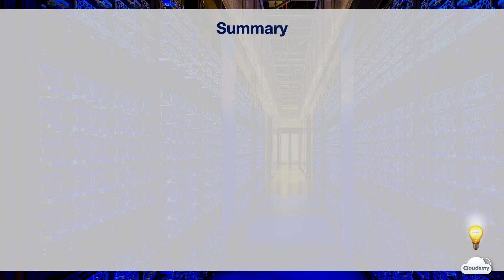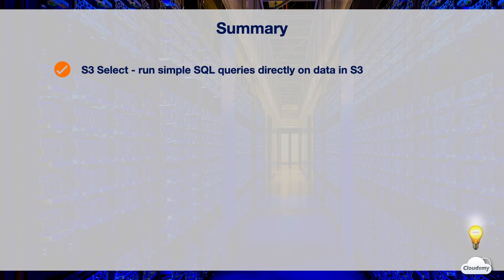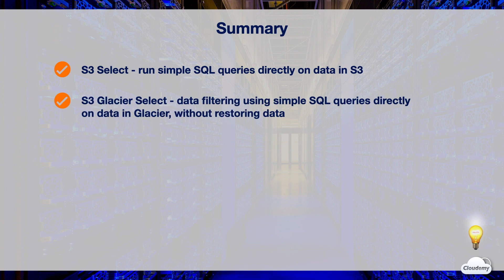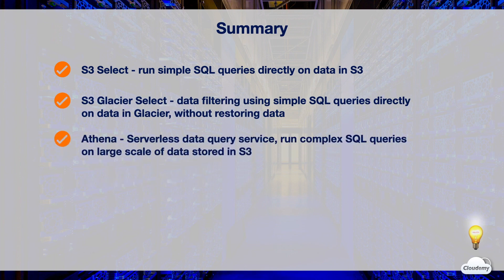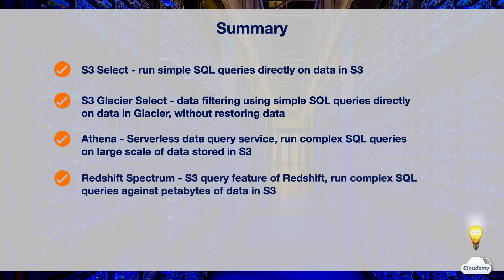In this episode, we've learned different S3 query in place options. With S3 Select you can run simple SQL queries and select only a subset of data from an object. Glacier Select allows you to perform filtering operations using simple SQL directly on data in Glacier, without having to restore data. Athena is a serverless data query service where you can run large and complex SQL queries on data stored in S3. Redshift Spectrum allows you to run complex SQL queries against petabytes of data in S3, without having to load or transform any data into Redshift. Both S3 Select and Glacier Select are built-in S3 query features, whereas Athena and Redshift are separate AWS services.